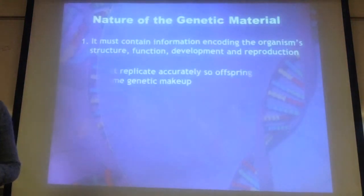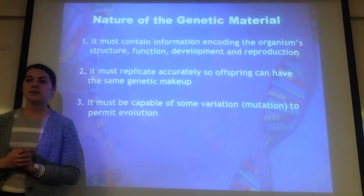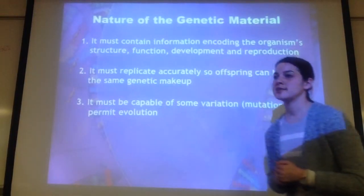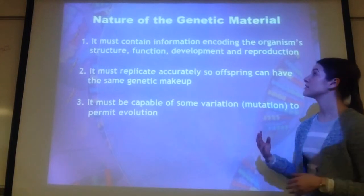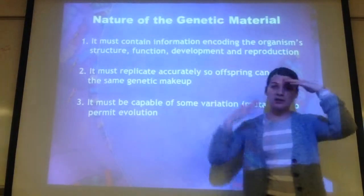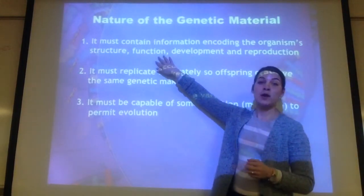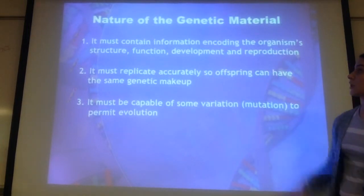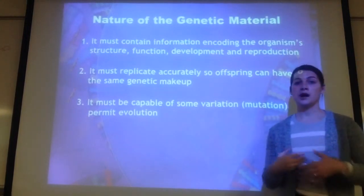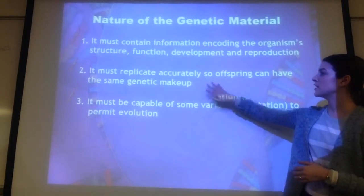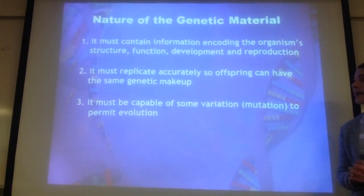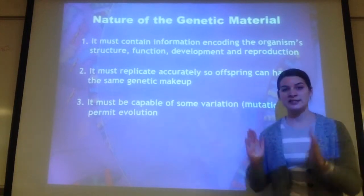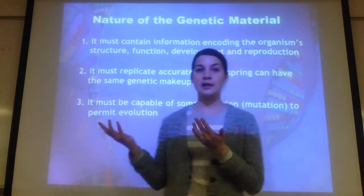Last thing — the nature of the genetic material. Our DNA is what makes us who we are: it's the information coding for the proteins that make our structures, hair, skin, what we look like, how we function, our development, and our reproduction. Number two: DNA has to replicate accurately so offspring can have the same genetic makeup — that's why Chargaff's rules are so important. Every time we replicate DNA, it follows that same distinct pattern.